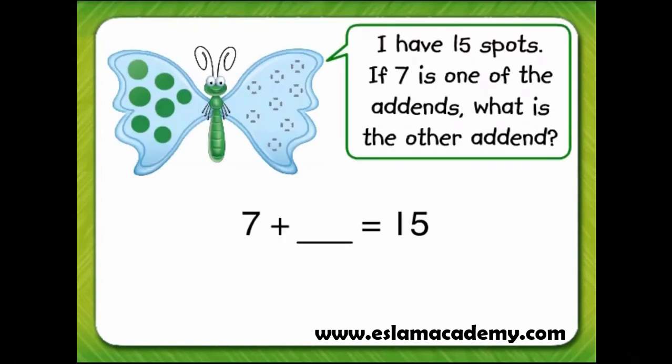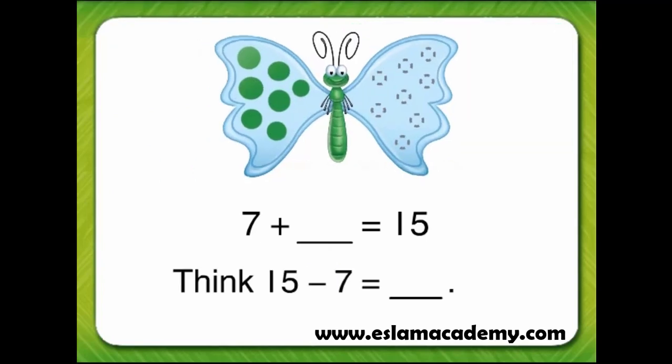I have 15 spots. If 7 is one of the addends, what is the other addend? Think 15 minus 7 equals some number. We can draw spots on the butterfly to help us.